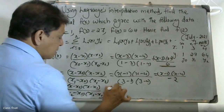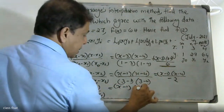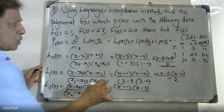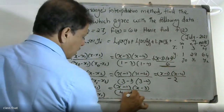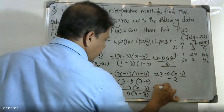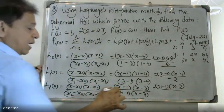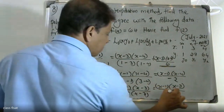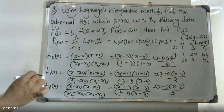For L2(x), substituting: the numerator is (x minus x0)(x minus x1) = (x-1)(x-3). The denominator is (x2 minus x0)(x2 minus x1) = (4-1)(4-3) = (3)(1) = 3. So L2(x) = (x-1)(x-3)/3.